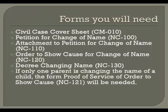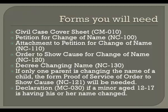If you are changing the name of a child and that child's other parent is not going to be a petitioner on this case, you will need to have that parent served with the Order to Show Cause for Change of Name. You will also need Form NC-121, Proof of Service of Order to Show Cause, to show that this has been done. If you are changing the name of a child between the ages of 12 and 17, that child will need to write a statement under penalty of perjury consenting to the name change, which can be done on Form MC-030, Declaration. These forms may be obtained from your local court or downloaded from www.courts.ca.gov.